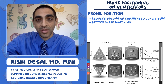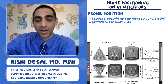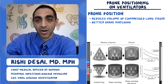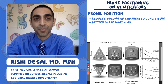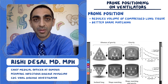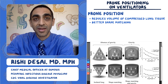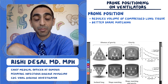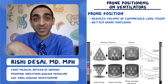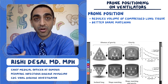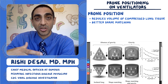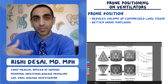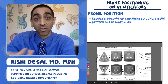The final column shows a chart of gas-to-tissue ratio. Essentially, you have much better gas-to-tissue ratios when you're prone versus supine simply because the shape of your lungs is better matched to gravity.